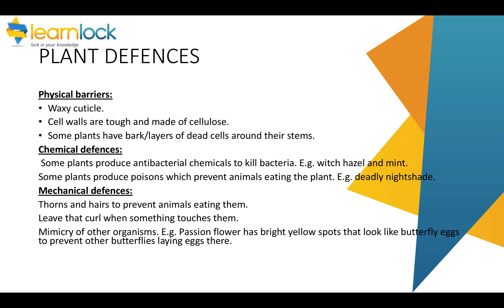Chemical defences are chemicals that plants might produce. For example, witch hazel and mint produce antibacterial chemicals to kill bacteria. Some plants also make poisons to stop other animals eating them, like deadly nightshade or tobacco. Mechanical defences are things a plant might do to stop pathogens getting in — they may have thorns and hairs, or leaves that curl up when something touches them. Another defence is mimicry: the passion flower, for example, has bright yellow spots on the leaf that look like butterfly eggs, stopping butterflies from laying eggs there. Other plants mimic the shape or size of something to prevent animals eating them.